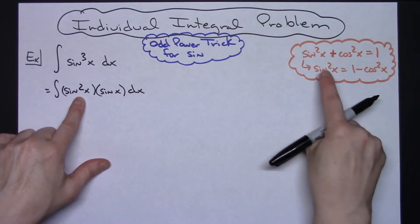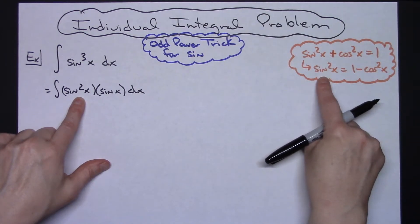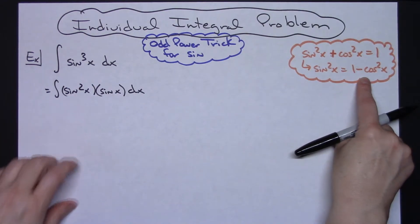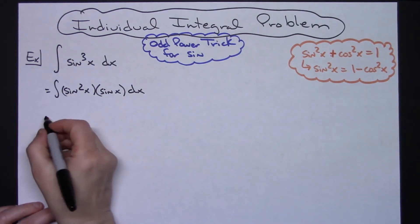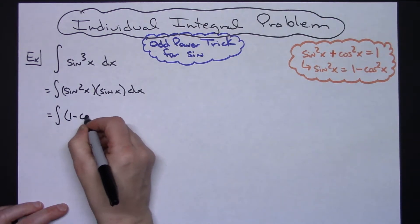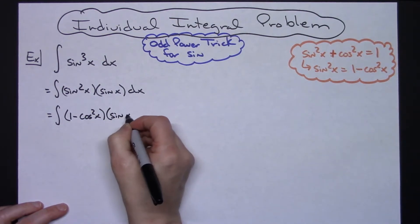There's my sine squared x. From this Pythagorean identity, solving for that sine squared x, I know that's equivalent to 1 minus cosine squared x. So I'm going to do that substitution. I'm going to change the sine squared x there to 1 minus cosine squared x times sine x.